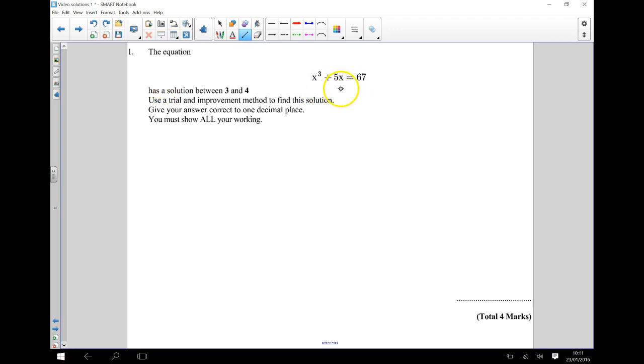Hi, in this video we've got this equation here, x cubed plus 5x is equal to 67, and we're being told that it has a solution between 3 and 4. We're going to use trial and improvement to find this solution, and we want our answer to be to one decimal place.